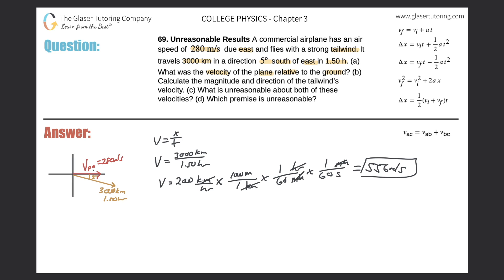So that is the velocity — the velocity of the plane relative to the earth is 556 meters per second. Now letter B: calculate the magnitude and direction of the tailwind's velocity.